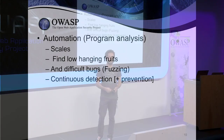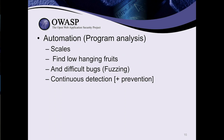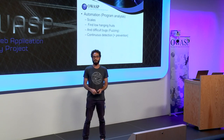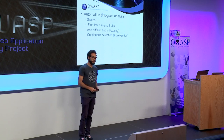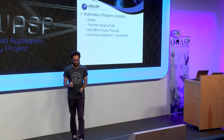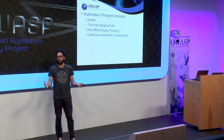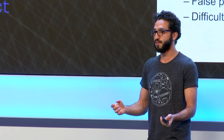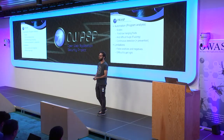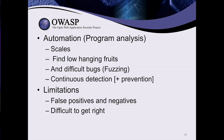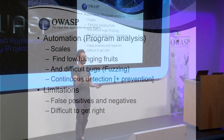Automation scales and can find low-hanging fruit bugs like straightforward XSS and SQL injection with static analysis. It also finds difficult bugs — fuzzing finds very difficult edge cases like off-by-one and heap overflows. A great thing about automation is it gives you continuous security: instead of a one-point-in-time review, you can keep scanning the code continuously. However, automation has limitations too — false positives and negatives — and it's hard to get right with a sane signal-to-noise ratio.